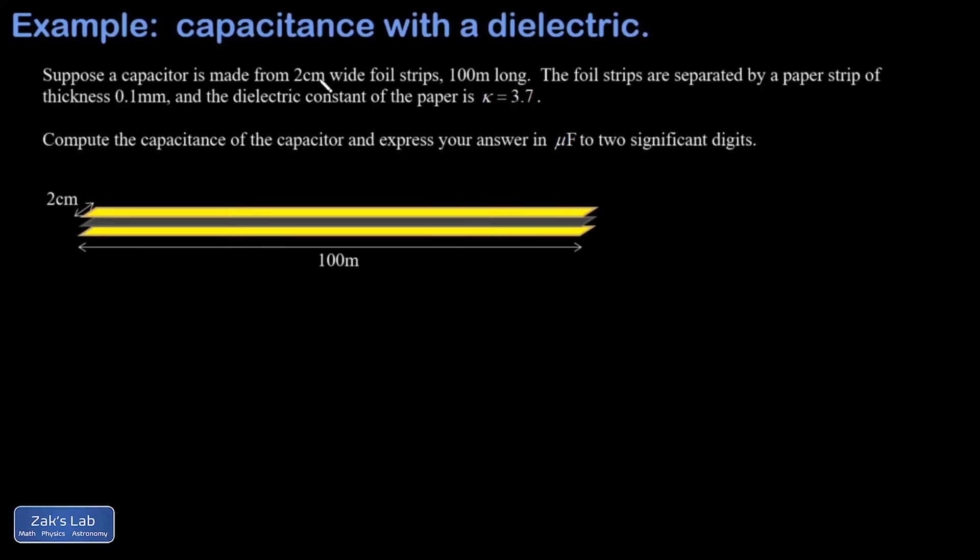So in this example, I have foil strips 2 centimeters wide and 100 meters long, and they're separated by a paper strip of thickness 0.1 millimeters, that gives you your plate separation distance, and the dielectric constant of the paper is 3.7. I want to get the capacitance of this and express it in microfarads to two significant digits.